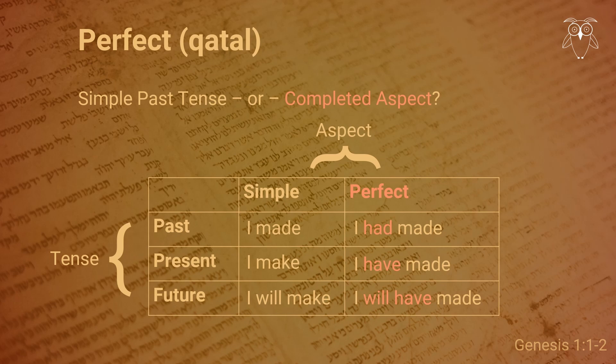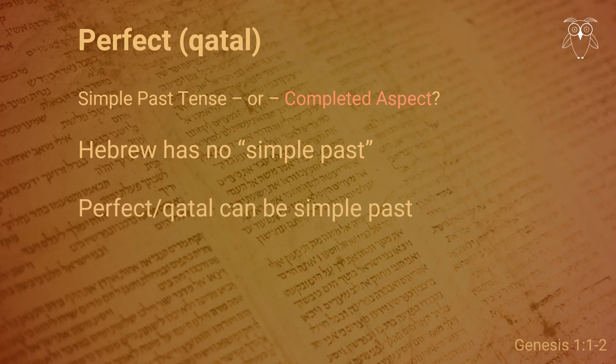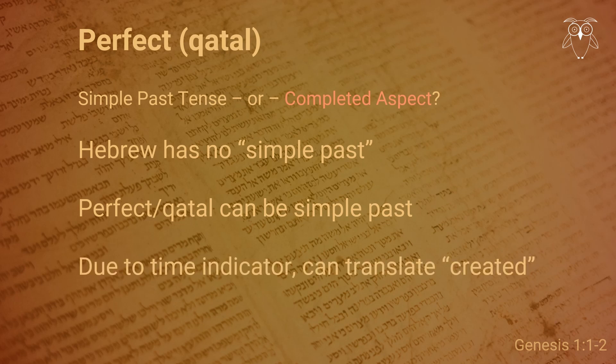Having said all that, since Hebrew does not have a simple past, the perfect can also be translated as a simple past, depending on the rest of the sentence. In this sentence, for example, we already have a time indicator, 'in the beginning,' making it more natural to translate with the simple past, 'created,' rather than a perfect like 'has created.'